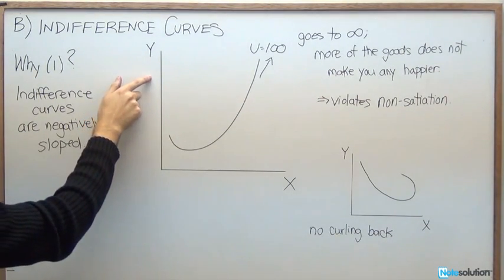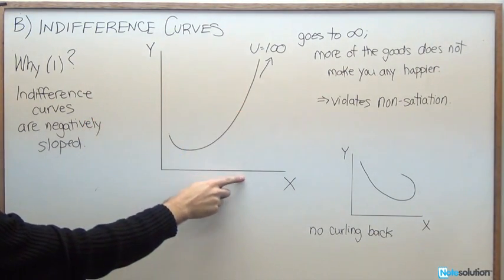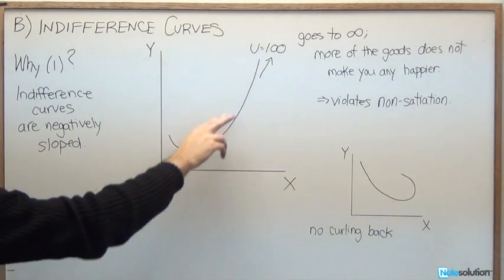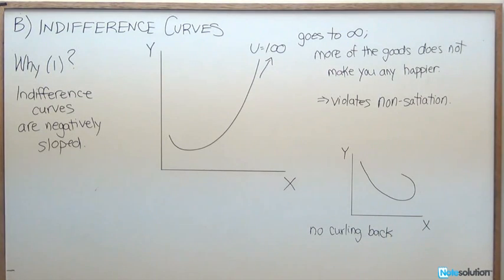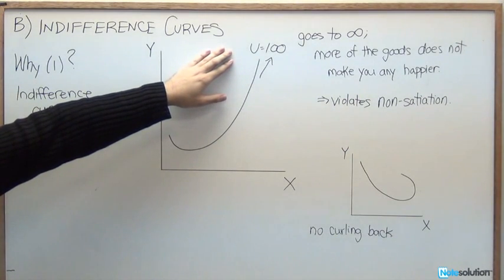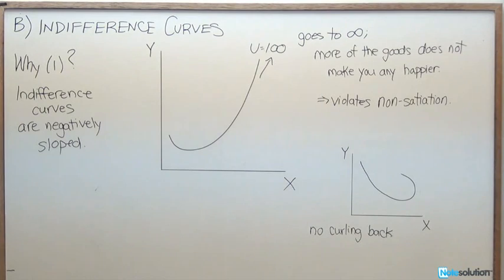But if we also had, say, 10 units of good y and 10 units of good x, that's also going to give us a value of 100. And we're going to notice here that that trend just goes off onto infinity. We're never going to have any more or any less than a utility value of 100, regardless of how many units of good x and good y that we have.